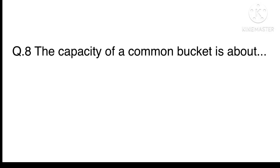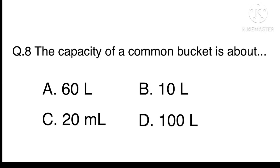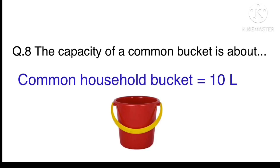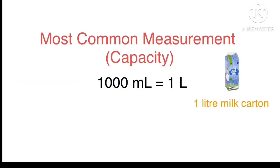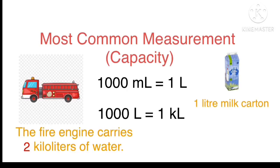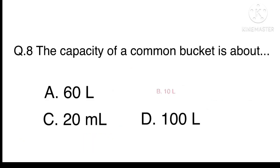Question 8. The capacity of a common bucket is about A. 60 litres B. 10 litres C. 20 millilitres Or D. 100 litres. A common household bucket is about 10 litres. Let's remember this: A thousand millilitres equals one litre. A thousand litres equals one kilolitre. The answer is B. 10 litres